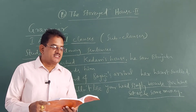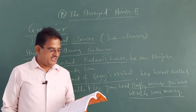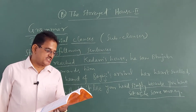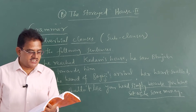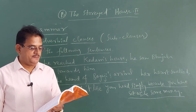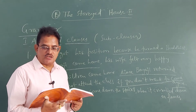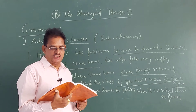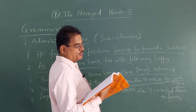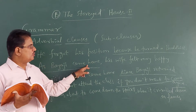In bit B, combine the following pairs of sentences using the words given in brackets. First: 'He forgot his position as a Hindu. He turned a Buddhist.' Combined using 'because': 'He forgot his position as a Hindu because he turned a Buddhist.' Sentence two: 'Bayaji came home. His wife felt very happy.' Combined using 'as': 'As Bayaji came home, his wife felt very happy.' What is underlined in each of the sentences is the adverbial clause.